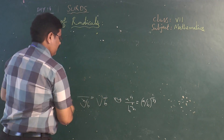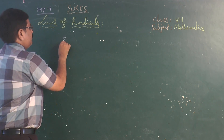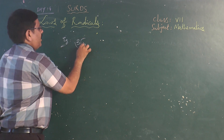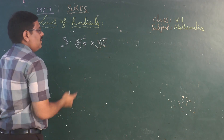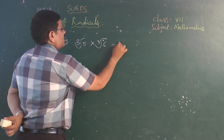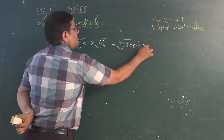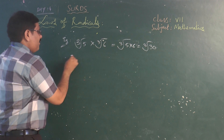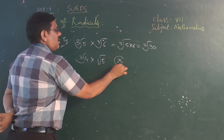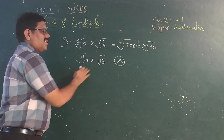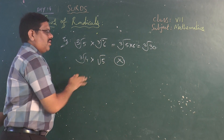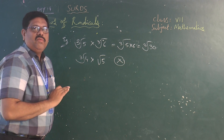Taking examples: cube root of 5 times cube root of 6 — since the orders of the radicals are the same, we can write it as cube root of 5 times 6, that is cube root of 30. But if you take cube root of 4 times square root of 5, we cannot do such operations. We cannot write it as a single surd. We have to leave it as cube root of 4 times square root of 5 and cannot go further.